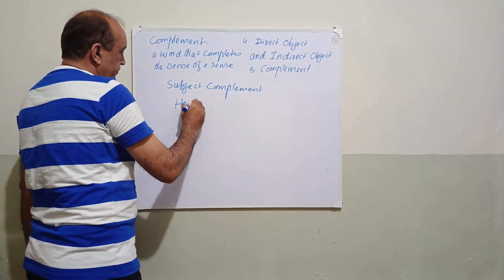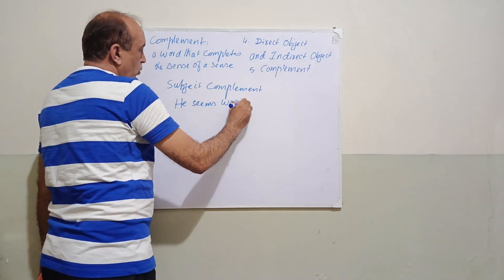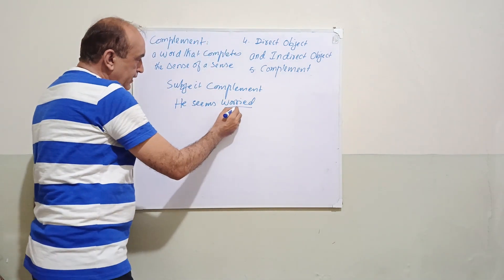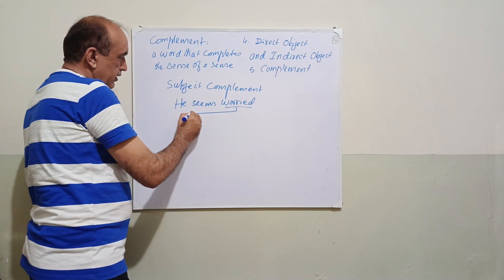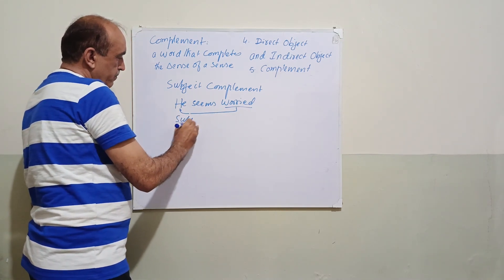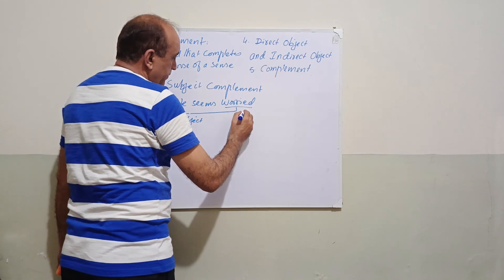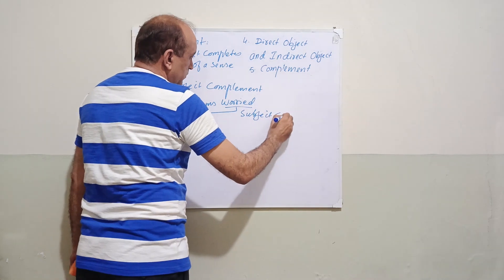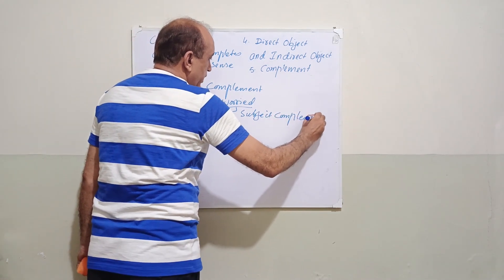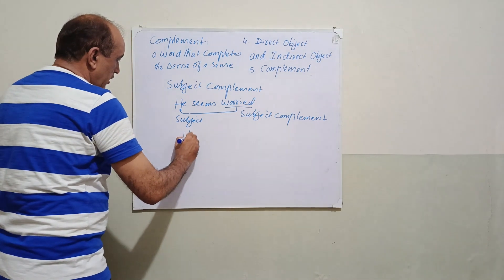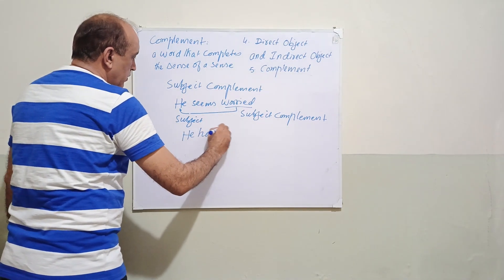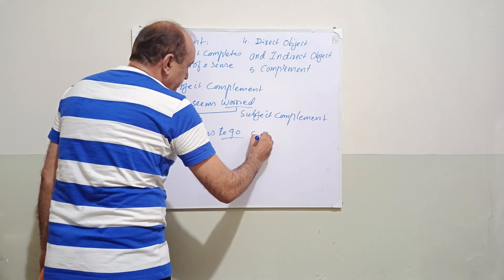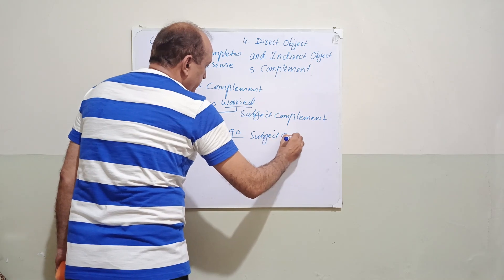Here is an example of subject complement: he seems worried. Worried is an adjective here, but it completes the sense of the subject 'he', so it is a subject complement. Another example: he has to go — here 'to go' is an infinitive but works as a subject complement.